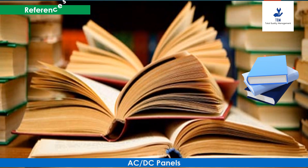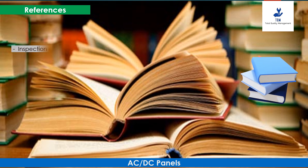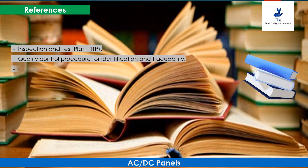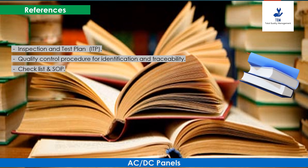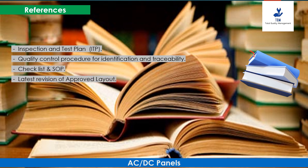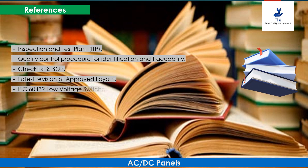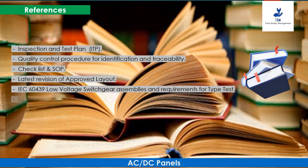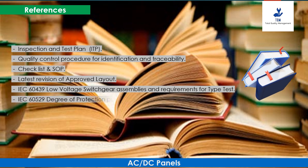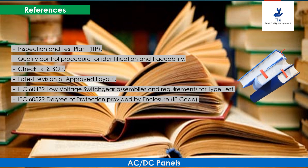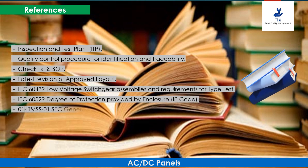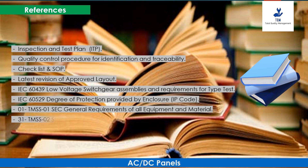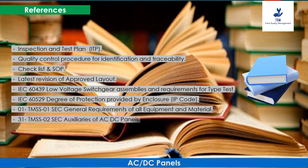The following documents may be referred to regarding this activity: Inspection and Test Plan (ITP); Quality Control Procedure for Identification and Traceability; Checklist and SOP Electrical; Latest Revision of Approved Layout; International Electrical Code IEC 60439, Low-Voltage Switchgear Assemblies and Requirements for Type Test; International Electrical Code IEC 60529, Degree of Protection Provided by Enclosure (IP Code); 01-TMSS-01 Saudi Electric Company, General Requirements of All Equipment and Material; and 31-TMSS-02 Saudi Electric Company, Auxiliaries of AC and DC Panels.